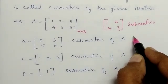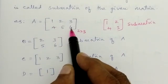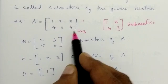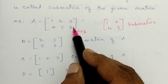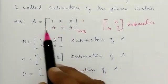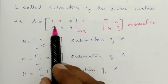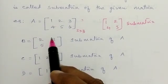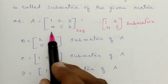Now observe matrix A with elements one, two, three, four, five, six. If I remove zero rows — meaning no row is removed — and zero columns — meaning no column is removed — then the matrix that remains is the same matrix. This means every matrix is a submatrix of itself. According to the definition, if I remove zero number of rows, no row is removed.